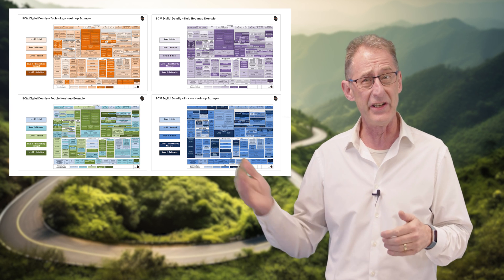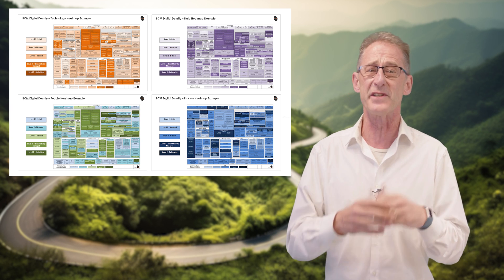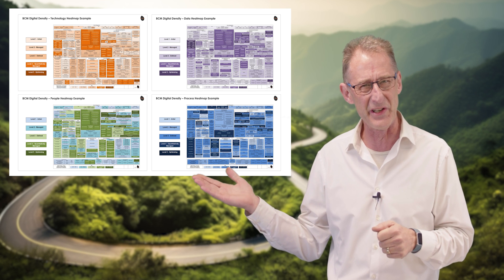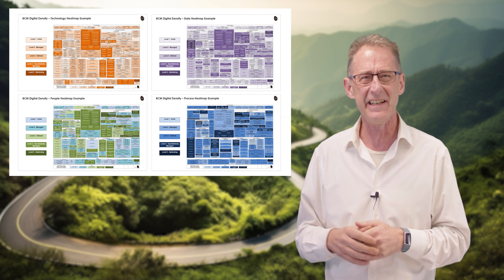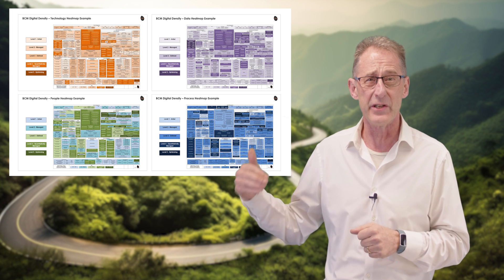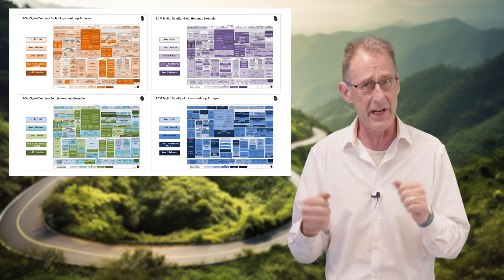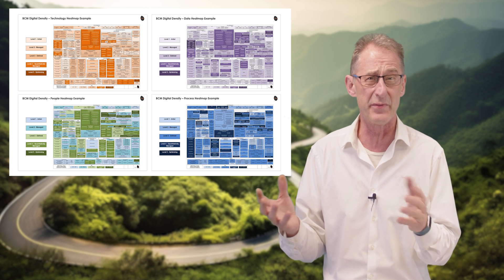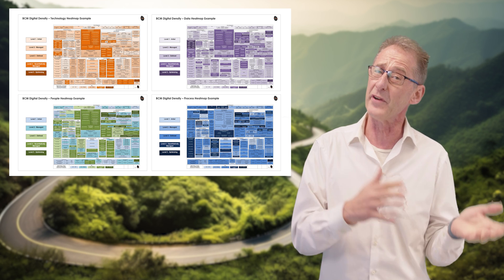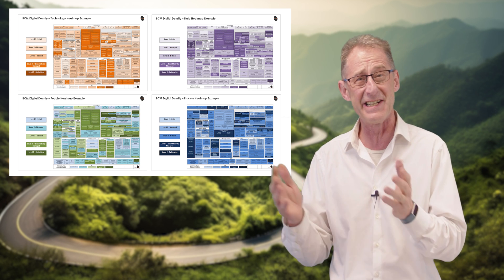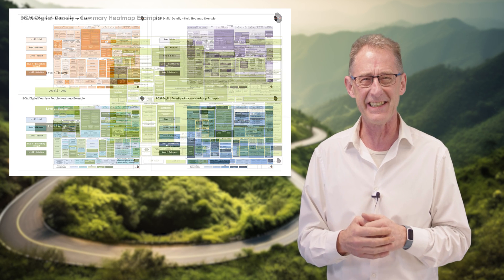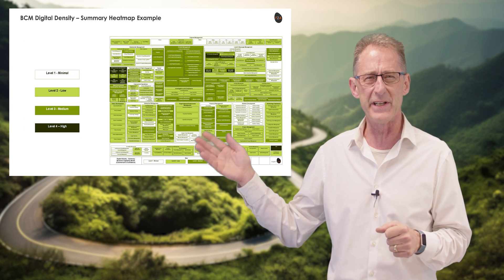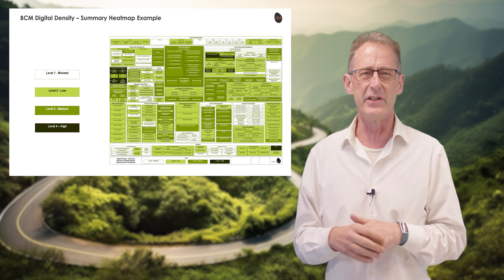Just as for technology, the other three facets can also be assessed qualitatively or quantitatively. Each then produces its own maturity overlay as shown here. After applying a weighting to each facet tailored for each capability — for example, the strategy management capability where people and data would likely be weighted higher than process or technology, while for accounts payable it might be data and technology that are weighted the highest — this then results in an overall digital maturity assessment for each capability, an example of which is shown here.